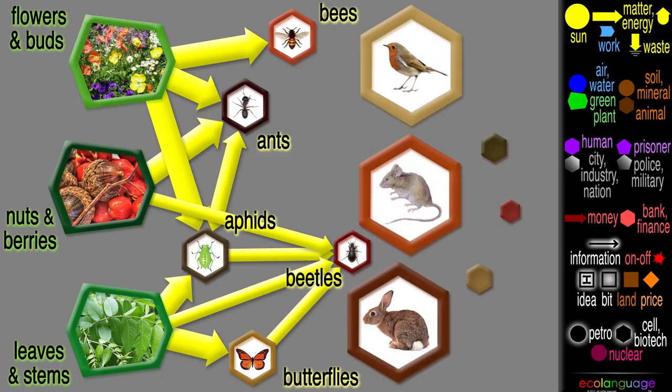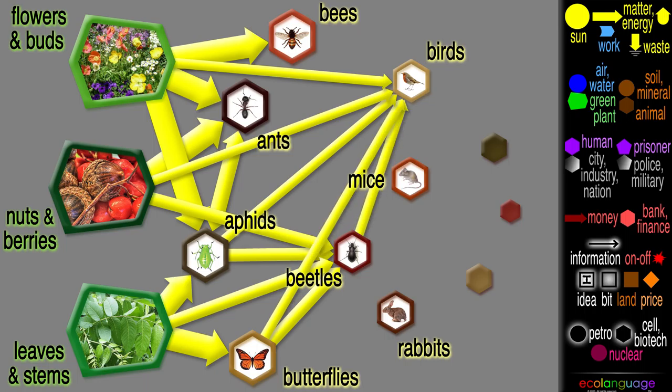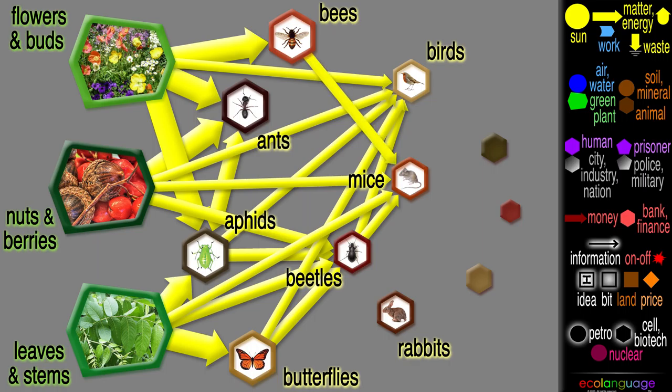Birds, mice, and rabbits are at the next level. Birds eat many things among plants and insects. So do mice, including honey from the bees. Rabbits like grass and leafy weeds.